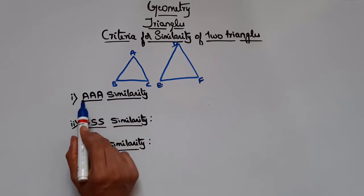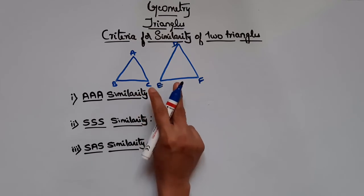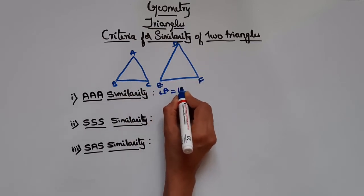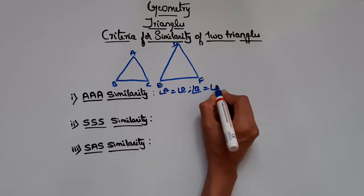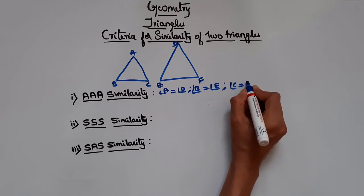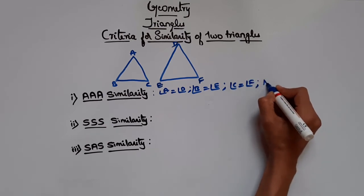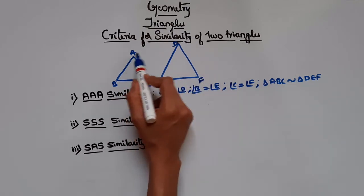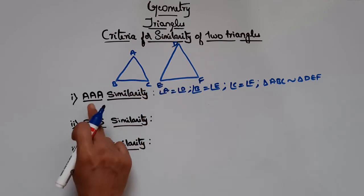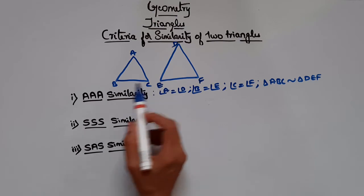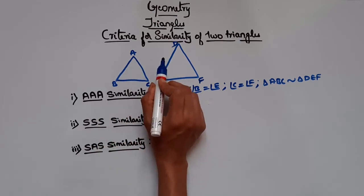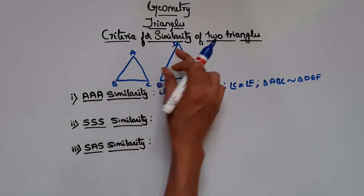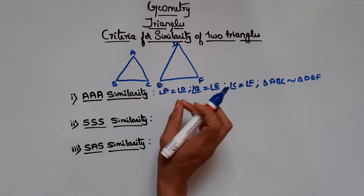What is AAA similarity — angle angle angle similarity? It says if in two triangles the corresponding angles are equal, that is angle A equals angle D, angle B equals angle E, and angle C equals angle F, then you can directly say triangle ABC is similar to triangle DEF by AAA similarity. We can also say AA similarity: if two corresponding angles are equal, the third will automatically be equal since the sum of angles in a triangle is 180°.